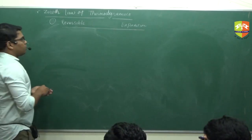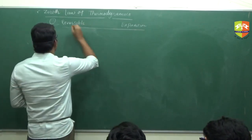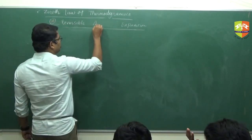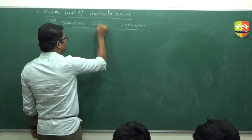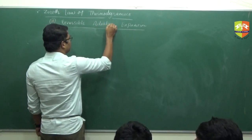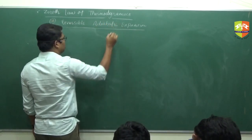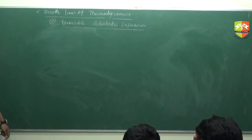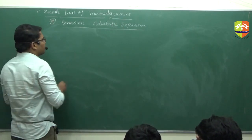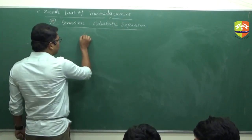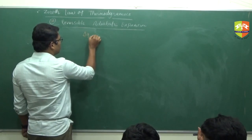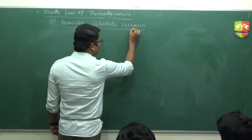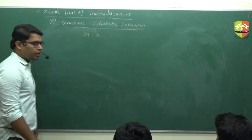Next slide: the fourth process is reversible adiabatic. In a reversible adiabatic process, delta Q is equal to zero. Expansion means work is done by the system, so work is negative.